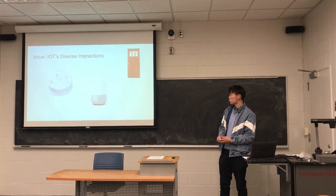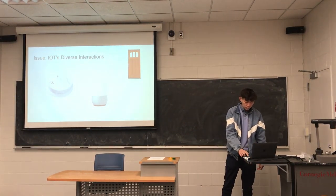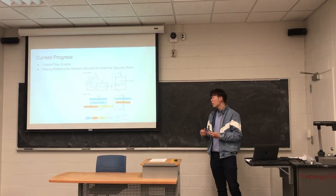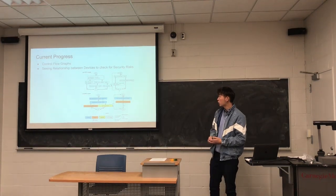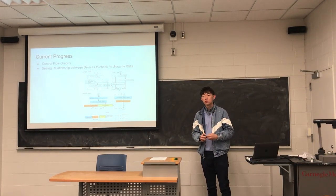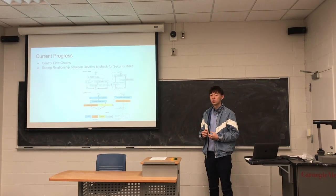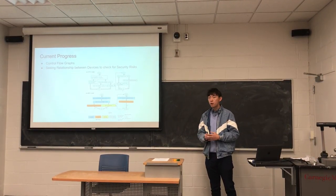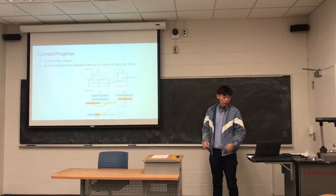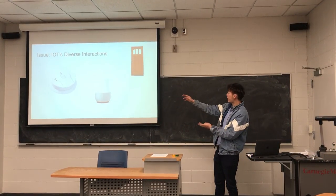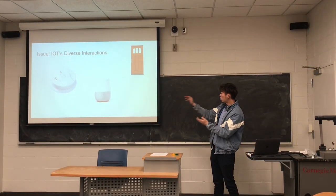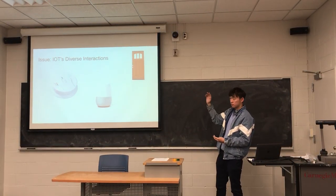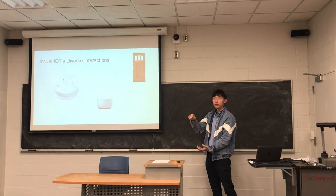This is one of the most important issues being addressed in the world right now as IoT continues to grow. Current research progress involves people trying to build control flow graphs to identify potential security issues in IoT household networks. In the example we described, the smoke detector controls the door, Google Home controls the smoke detector and the stove, and the door controls itself — so the door is at the very bottom of the control flow graph.